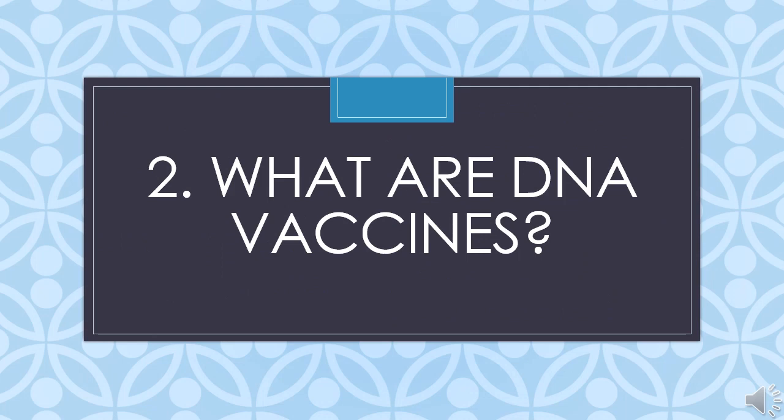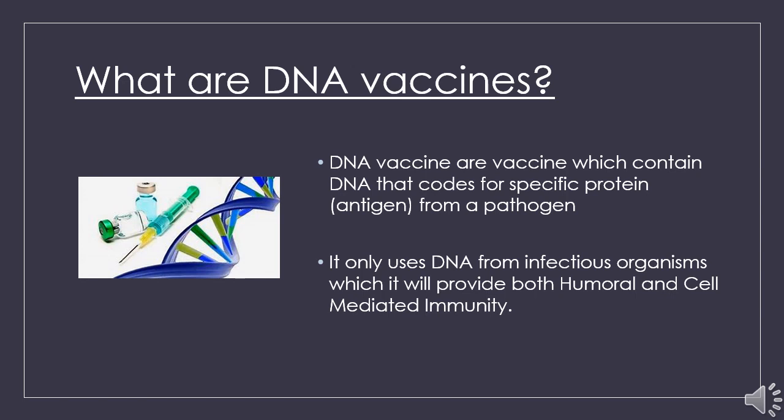Moving on to the next component: what are DNA vaccines? For over a hundred years, vaccination has involved either introducing live attenuated infectious agents or introducing specific antigens which the immune response acts against directly. A new approach has been developed involving the direct introduction of a DNA sequence including the antigen. This approach offers advantages including stimulation of both humoral and cell-mediated immunity, improved vaccine stability, and relative ease of large-scale manufacture.